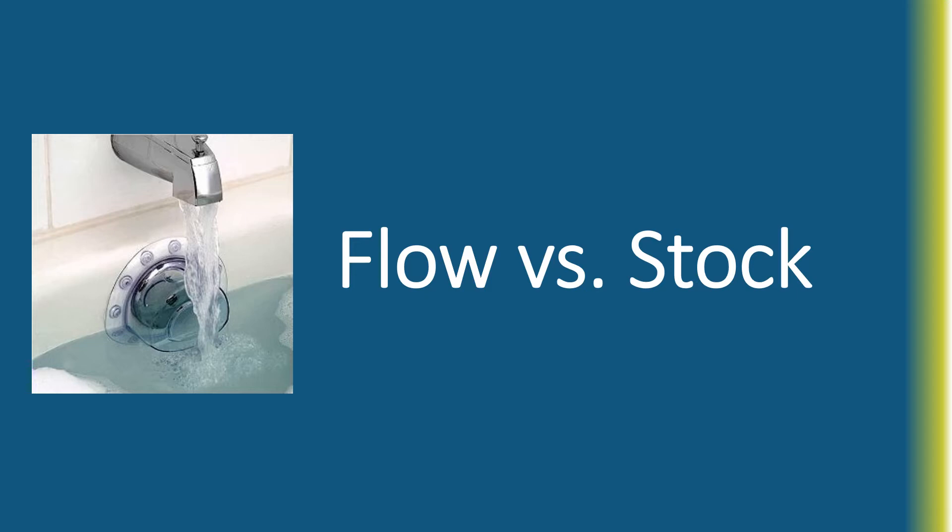The flow might be coming quite quickly and the stock might be quite low, or the stock might be quite high. What we're measuring with GDP is just the flow during a time period — how much new is coming out of the faucet.